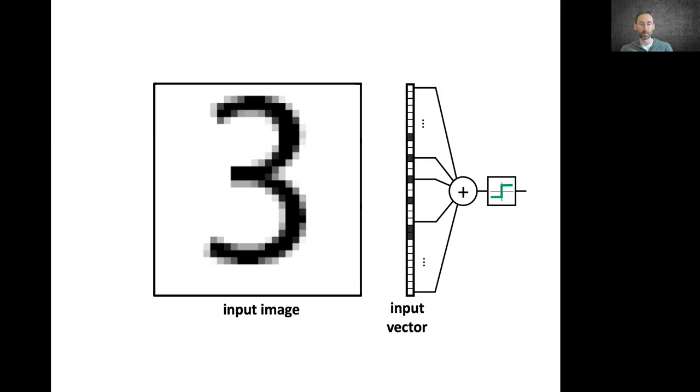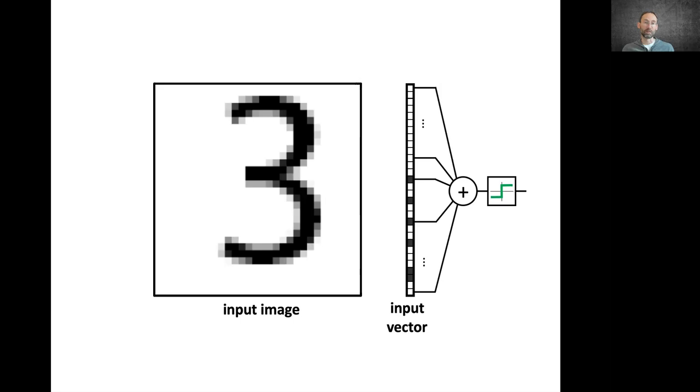If I just shift the image by one pixel, the vectorized input will be very different. The neural network will need to be shown a lot of examples in order to learn that shifted inputs should be classified in the same way.